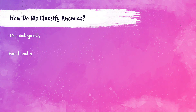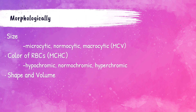We classify anemias morphologically and also functionally. Morphologically, we evaluate anemias by looking at the size of the red blood cell: are they normal size or normocytic, smaller than normal or microcytic, or larger than normal which is called macrocytic? We can visually see the size, but look at the red blood cell indice MCV to actually determine the size. We also look at the color concentration of the red blood cells based on the RBC indice MCHC — do they have normal central pallor called normochromic, increased central pallor called hypochromic, or decreased central pallor called hyperchromic? We also look at the shape of the red cell as well as its volume. Other red blood cell indices include RDW and MCH — check out my RBC indices video to learn more about those.